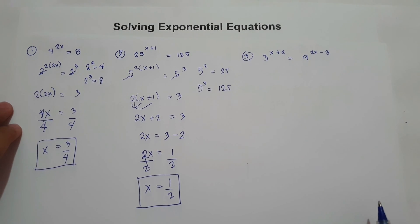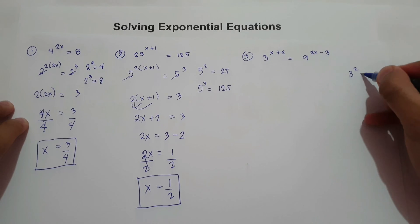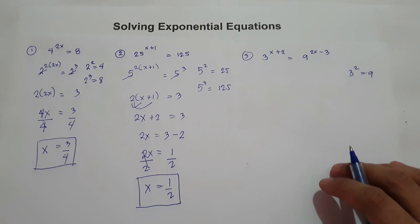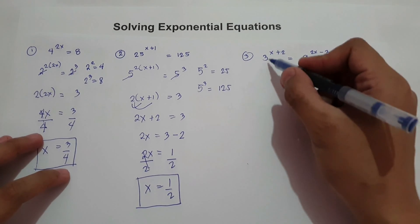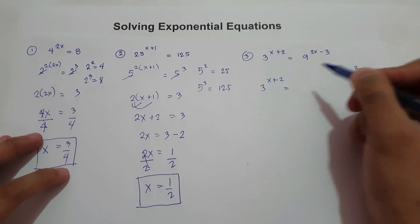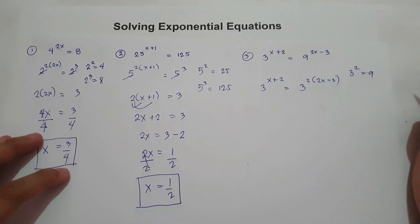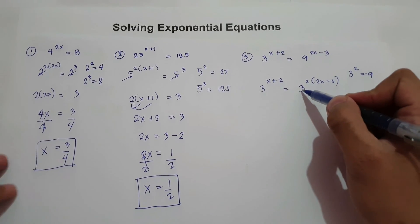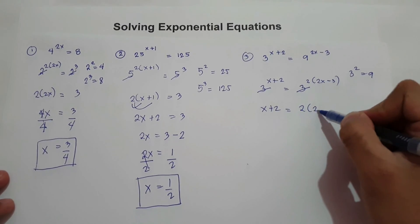What about number 3? Find the value of x. We have 3 raised to 2x equals 9 raised to 2x minus 3. Let us change 9 with base 3. 3 squared is 9. So let us change 9 into 3 squared. We have 3 raised to x plus 2 equals 3 squared multiplied by 2x minus 3. Since we have the same base, cancel the base: x plus 2 equals 2 multiplied by 2x minus 3.